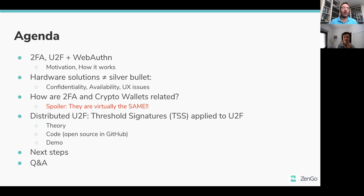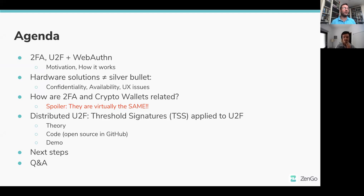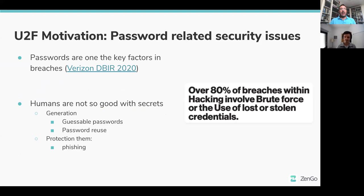What are we going to talk about today? We'll start with a brief intro to two-factor authentication, universal second factor U2F, and web authentication — the motivation and how it works. Then we'll explain why hardware solutions are not solving it all, due to confidentiality, availability, and user experience issues. We'll connect the world of crypto wallets and two-factor authentication, and show how solutions from cryptocurrency apply to U2F. We'll conclude with next steps and Q&A.